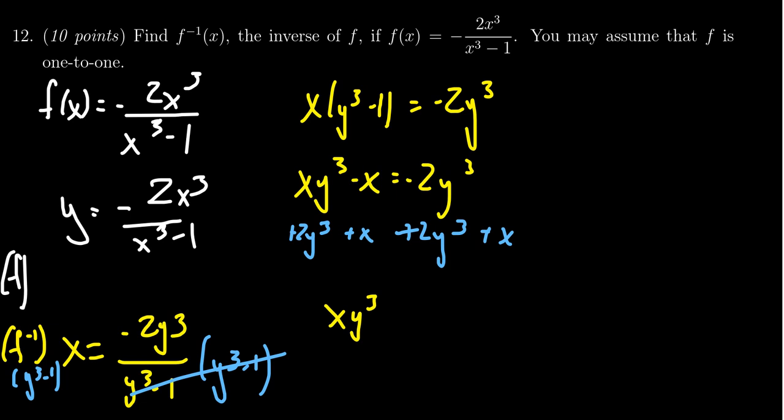So we get x times y cubed plus 2 times y cubed equals x. Now at this step sometimes we get a little bit confused, but you'll notice that everything on the left hand side is a multiple of y cubed. As such we can factor out the y cubed, and this will then give us y cubed times x plus 2 equals x. You'll notice that by factoring we actually got all of the y's together.